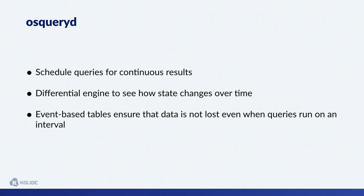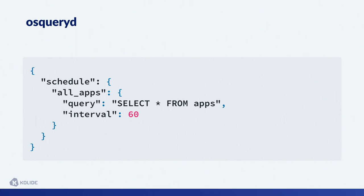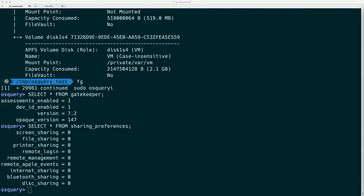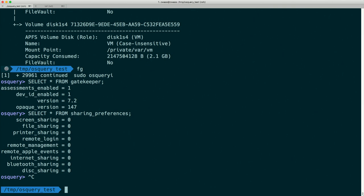The process_events table requires some more configuration, which I'll link resources for later. Other event-based tables include file integrity monitoring with the file_events table, and a hardware_events table that gives all events from USB devices plugged in and unplugged from the machine. In OSQuery D, we provide a schedule of queries we'd like it to run, and once we start it up, it just does that. Let's go through a little example of how to configure OSQuery D.